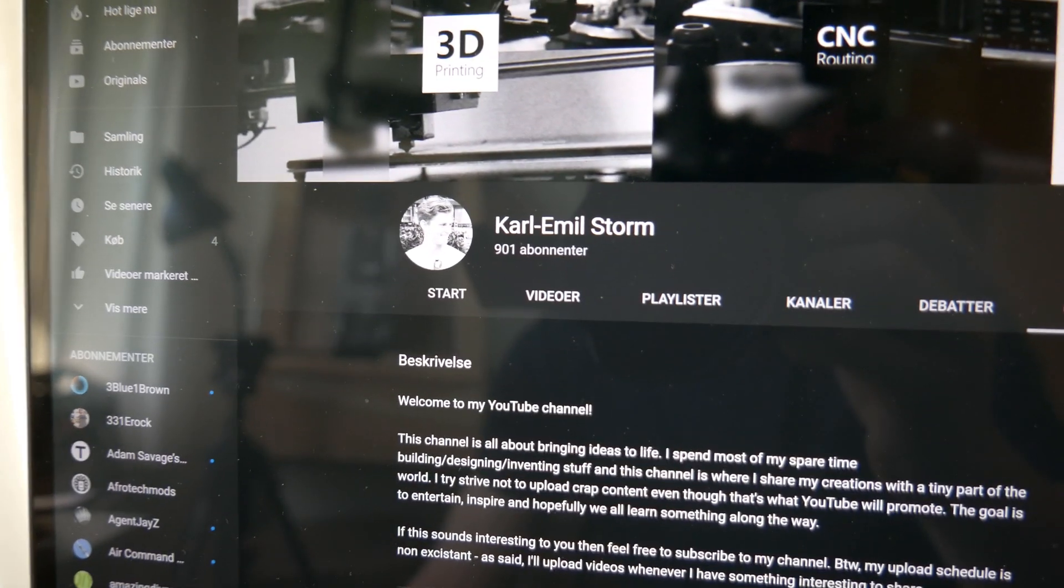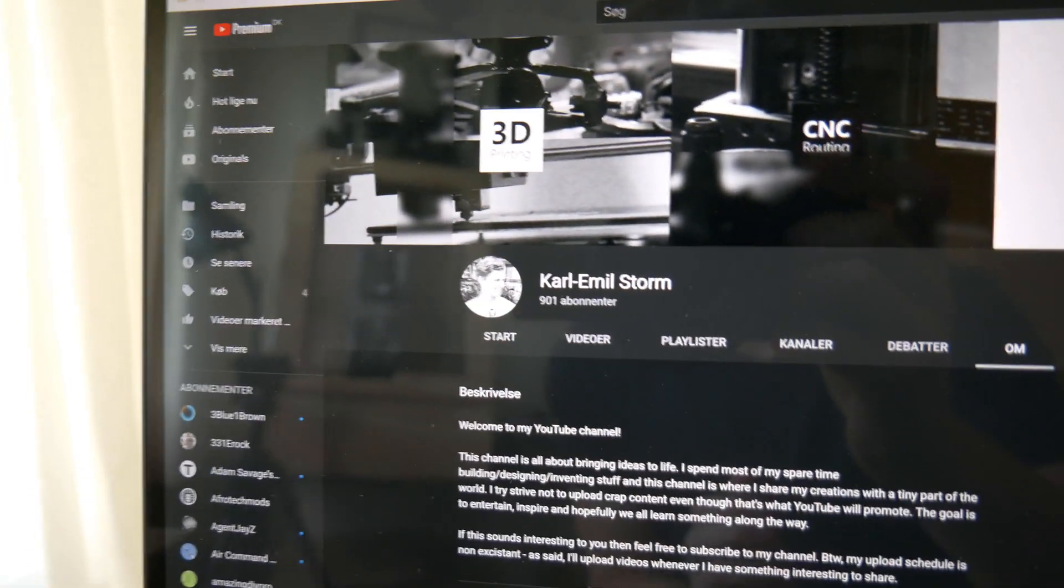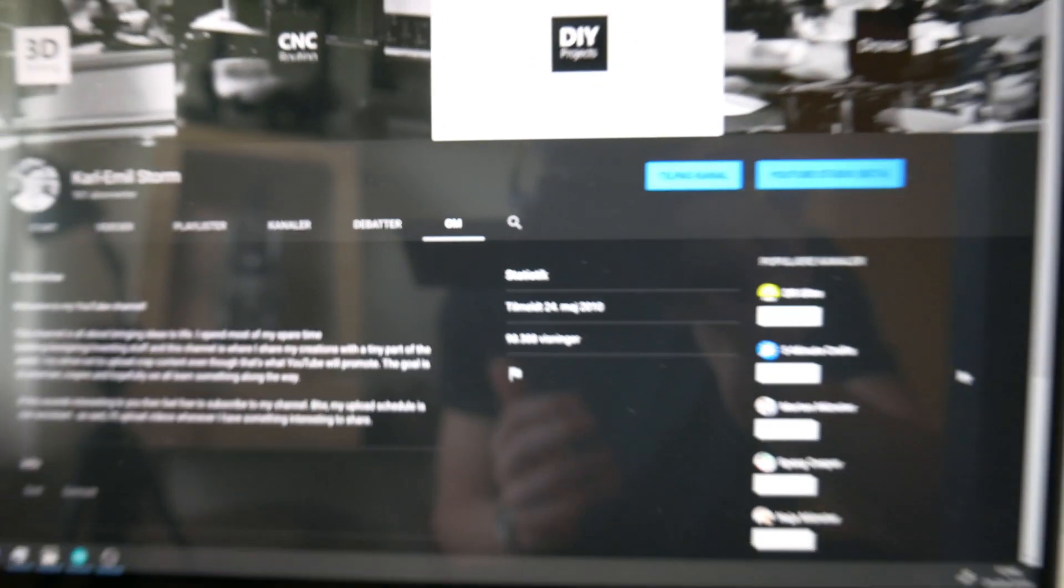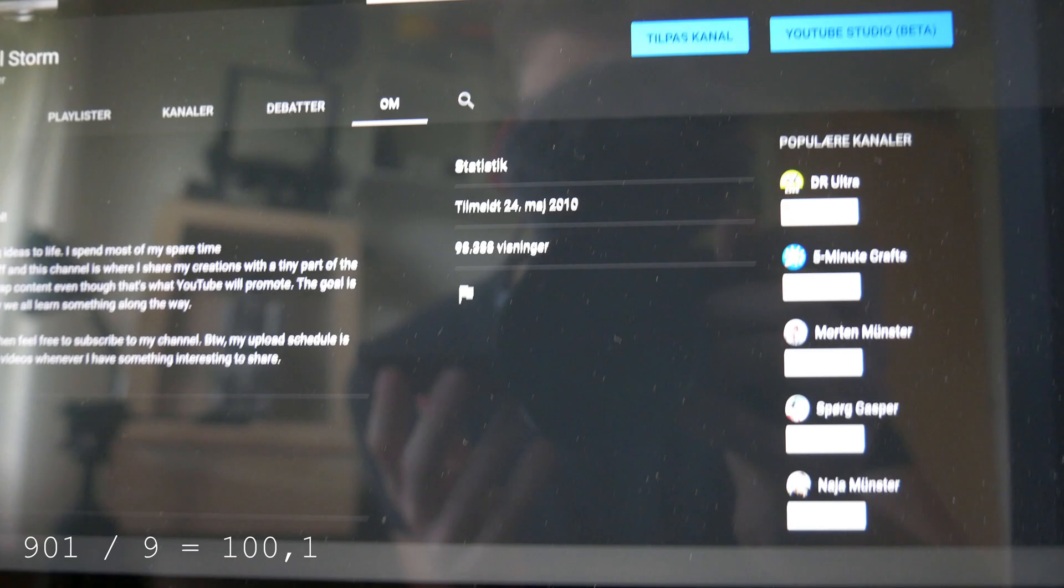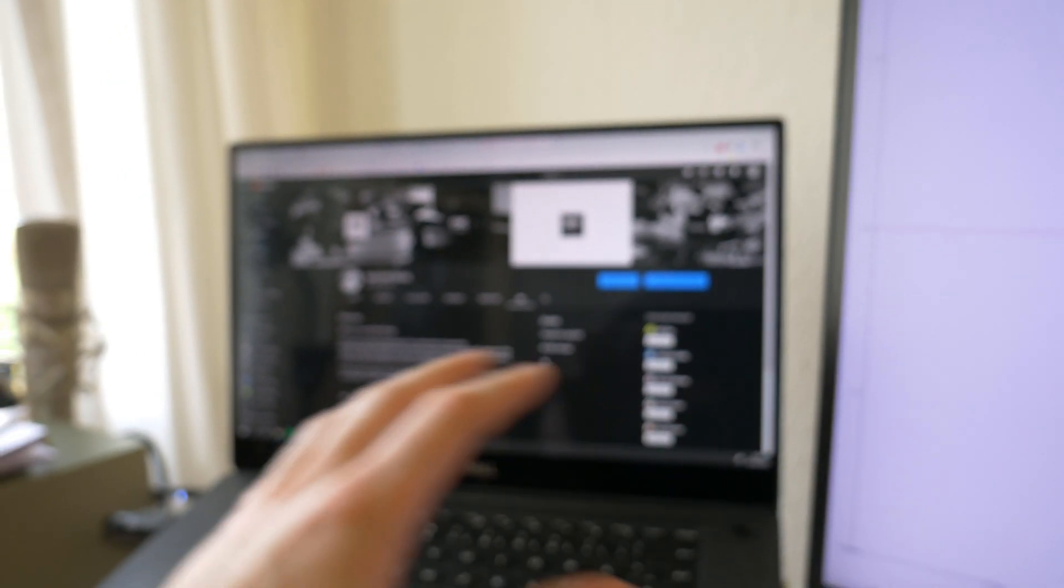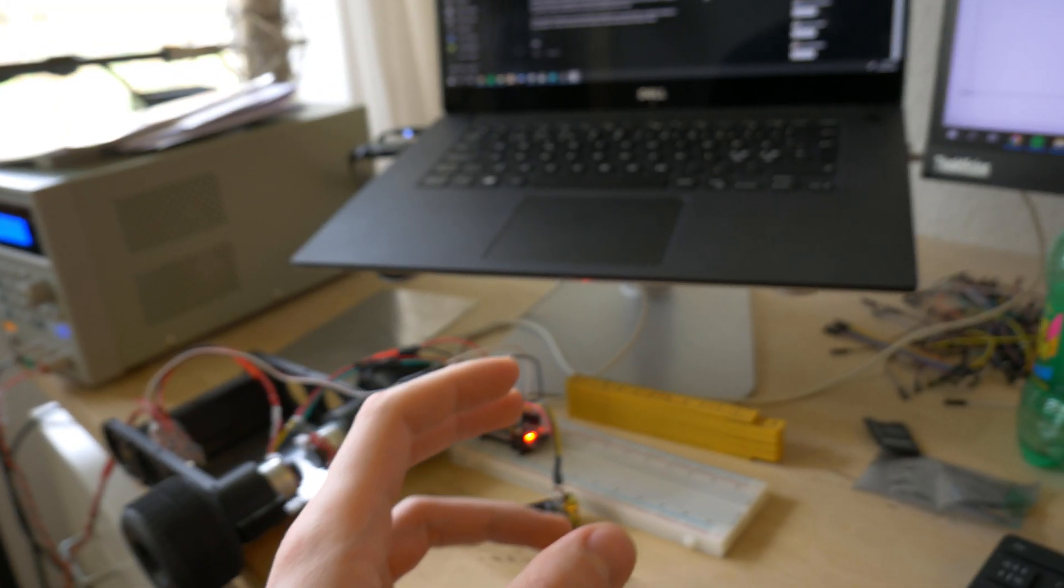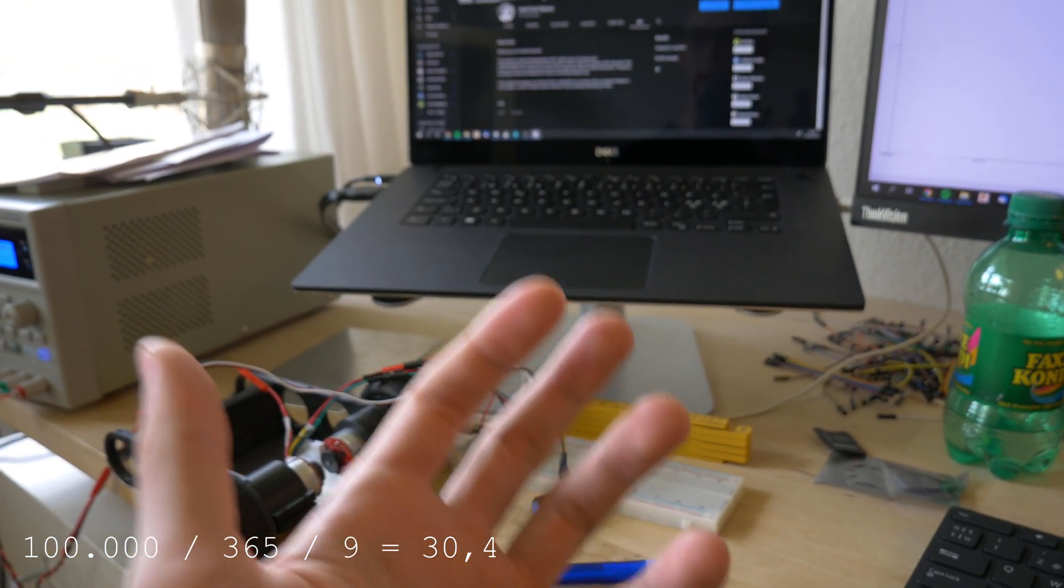As I'm filming this, I just saw on YouTube that I've just hit 901 subscribers. And that's such extreme speed that my subscribers have increased, because it's only 9 years since I first started my YouTube career. So like 100 subscribers per year, that's insane. I also have about 100,000 views. If you spread 100,000 views over 9 years, that's more than 30 views per day. That's insane.